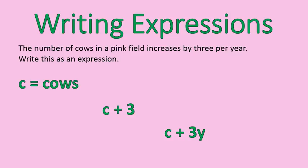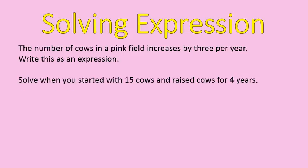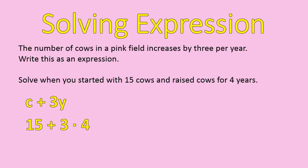Now let's look at how to actually use this by solving the expression. The number of cows in a pink field increases by 3 per year. Solve it when you start with 15 cows and you raise cows for 4 years. We're going to take our expression — cows plus 3 times the number of years — and insert the pieces of information we have. Cows is 15, and 4 is the number of years.